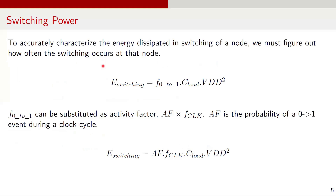To accurately characterize the energy dissipation in switching at a node, we need to consider how often the switching occurs. Switching events depend on the node's activity during operation. The power dissipated due to switching at a node can be written as F_0→1 times C_load VDD². The term F_0→1 represents the frequency of 0 to 1 transitions at the node. Further, we can express F_0→1 in terms of switching activity factor AF and clock frequency. AF is the probability of a 0 to 1 transition in a clock cycle. Finally, the switching power equation can be expressed as AF × F_clock × C_load × VDD².